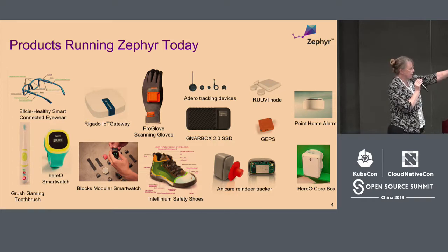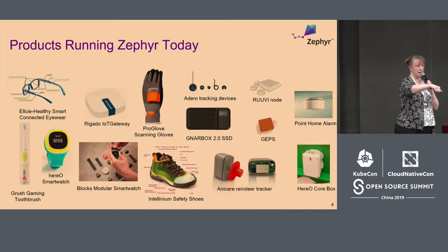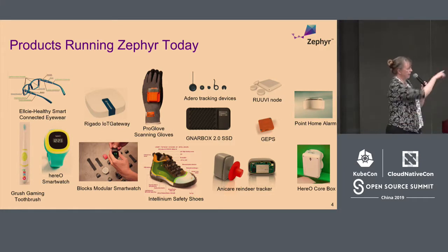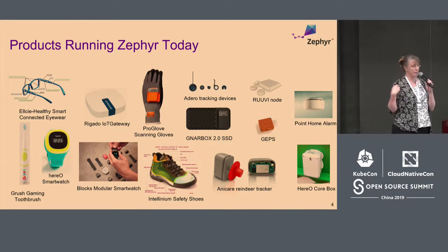Probably the most visible product is the ProGlove — a hand-mounted glove with a little scanner. Rather than holding a big device to read barcodes, it's integrated into the glove. This has gone through a second revision; the Rev2 of the ProGlove came out earlier this year, but it's been running Zephyr right from the very start.